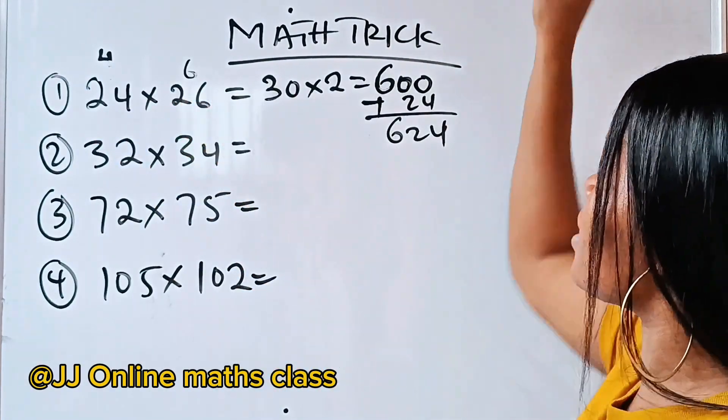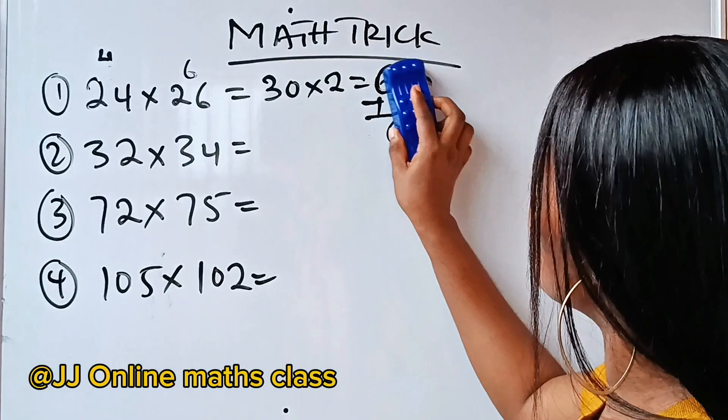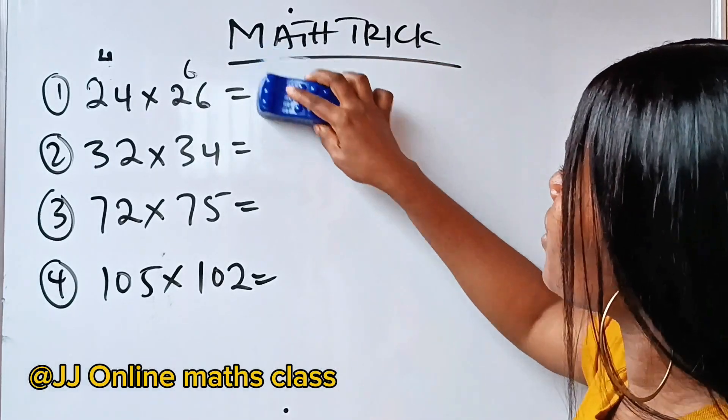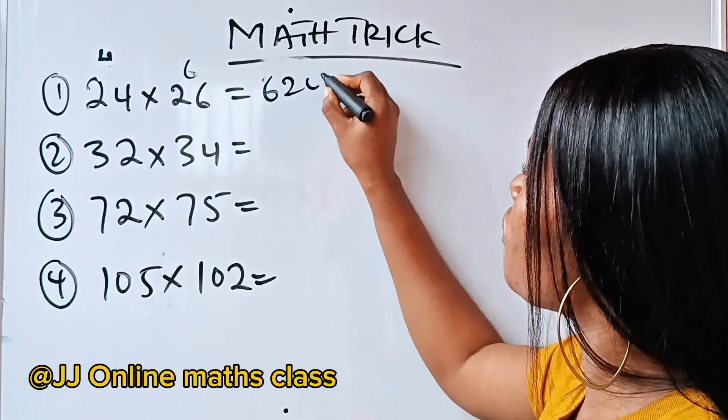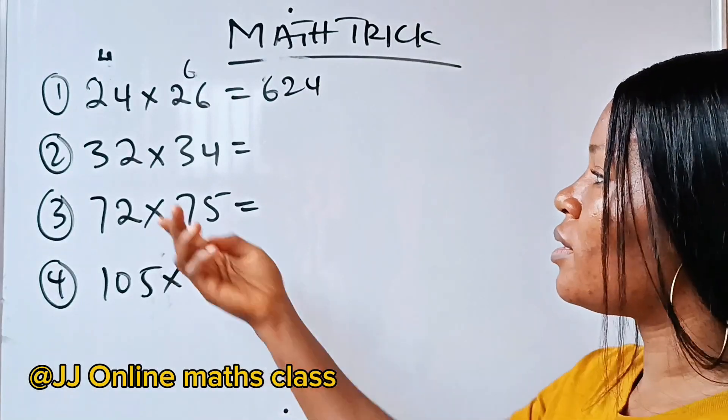So, 24 times 26 will give us 624. Don't worry. Just keep watching. We are going to get the other ones, even if you don't understand this.